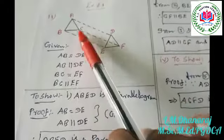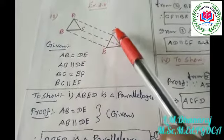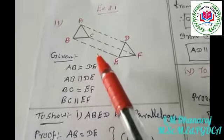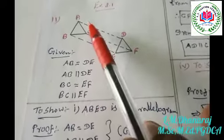Question number 11. This is the given diagram — ABC is one triangle and AEF is another triangle, and each edge is joined. It is given that AB is equal to DE.